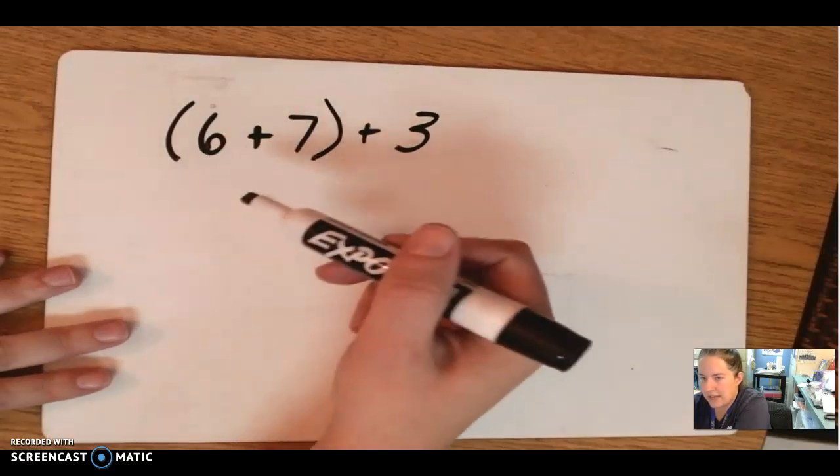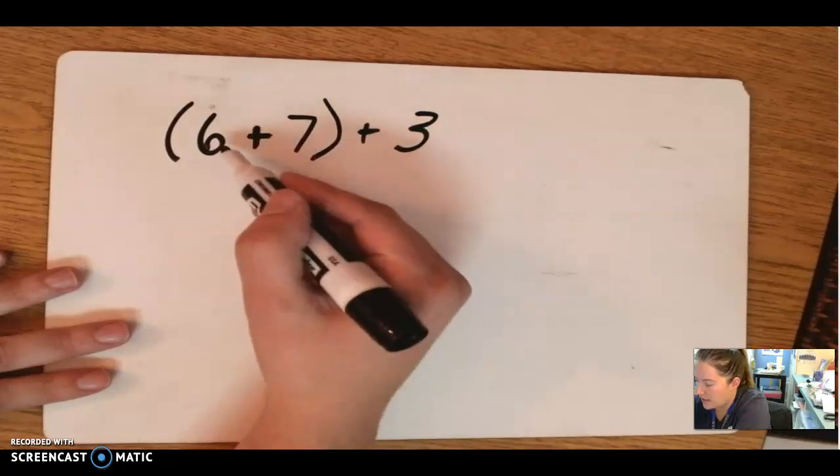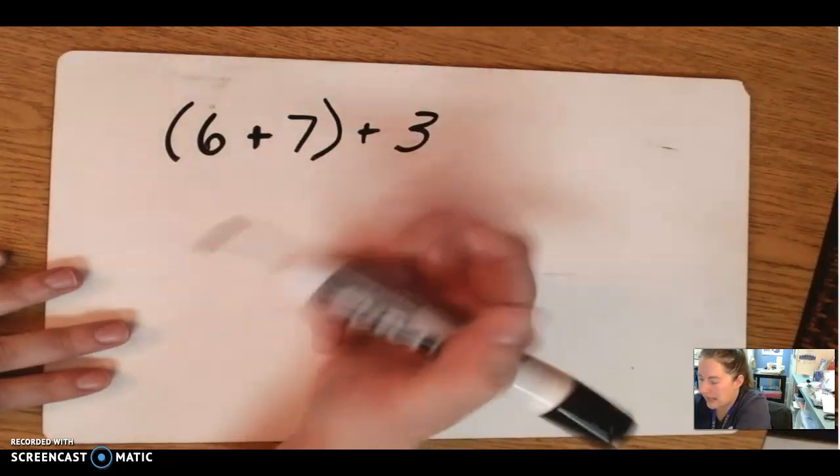So instead of doing 6 plus 7, sitting there going like 6, 7, 8, 9, 10, 11, 12, and doing 13 plus 3, 14, 15, and getting 16.